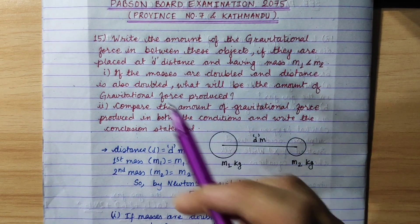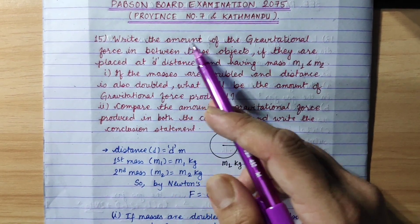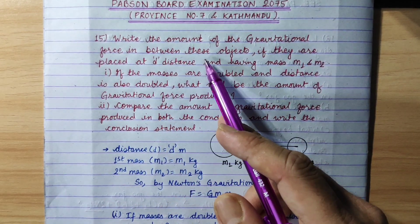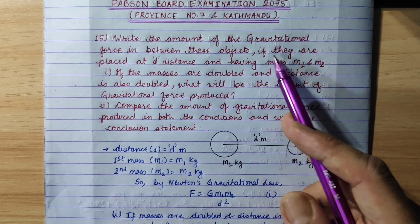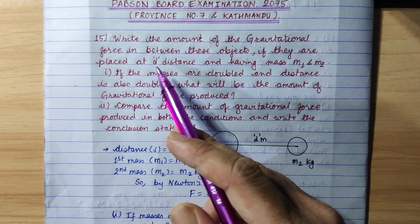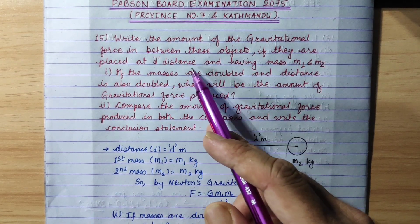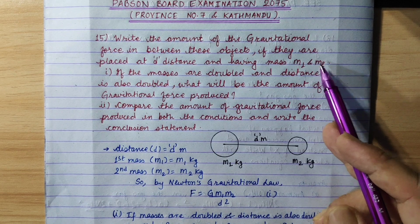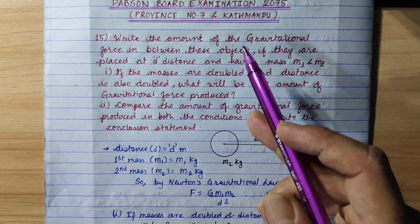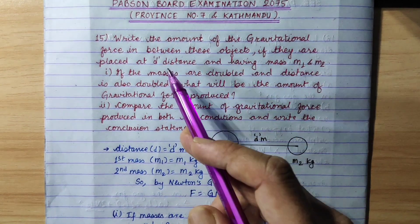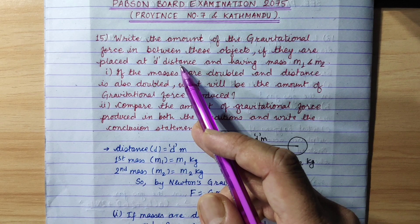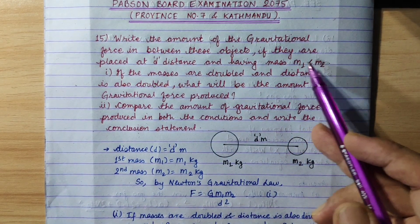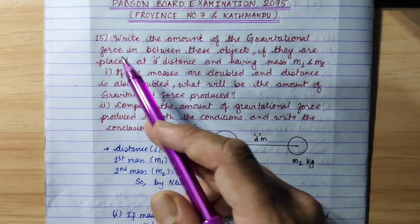Question 15. Write the amount of the gravitational force between these objects if they are placed at d-distance and having mass m1 and m2. The mass is given. If the distance is d, the amount of the gravitational force is given.